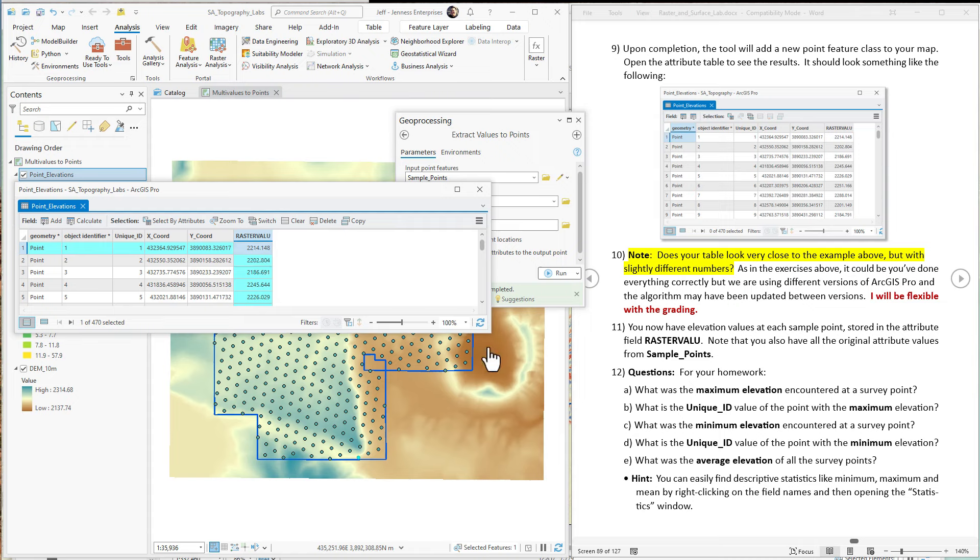All right, pretty simple. Now for the homework questions, we want to get some information about these. Let's clear our selection. So what is the maximum elevation encountered in a survey point? You just need to find the highest value in this list.